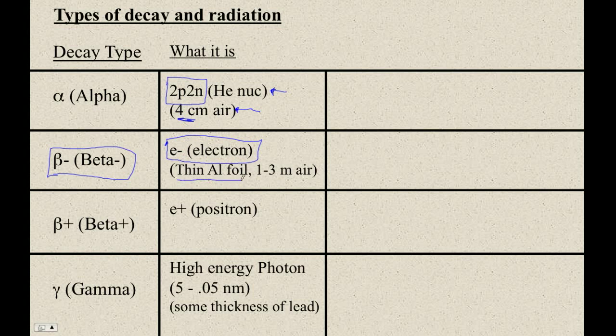You can stop beta decay with aluminum foil or three meters of air will eventually, it won't make it through that much.